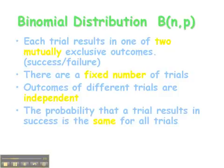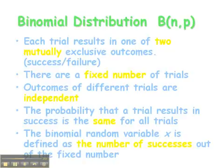Not only are the trials independent of one another, but the probability that a trial results in a success is the same for all trials — that's what P stands for. Regardless of our trial number, the success rate is the same for every single trial in a binomial experiment. The binomial random variable X is defined as the number of successes out of the fixed number N.